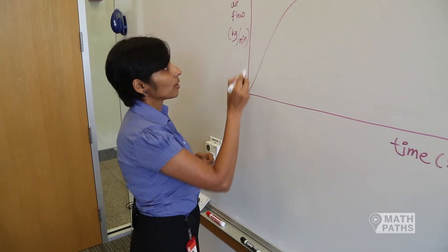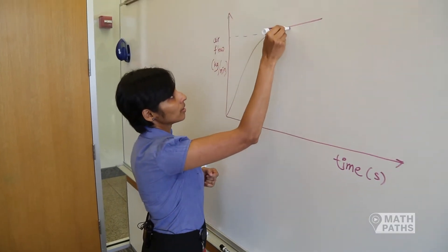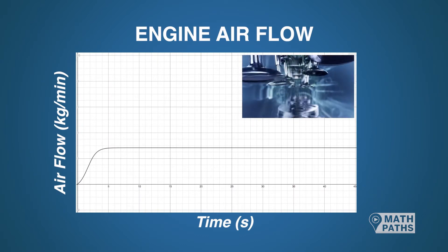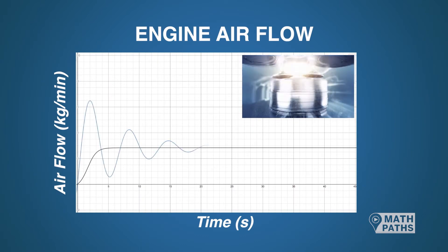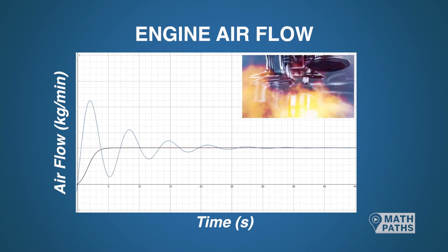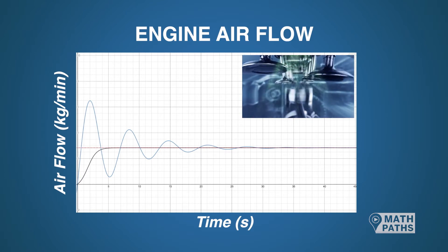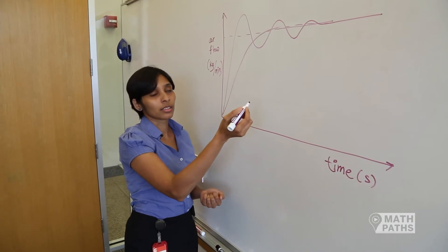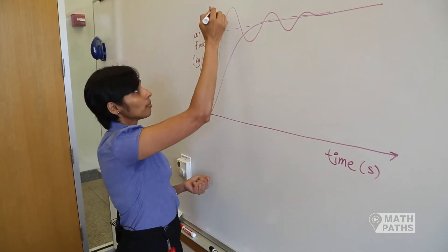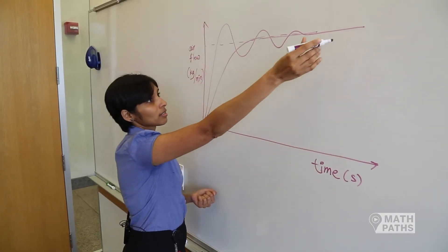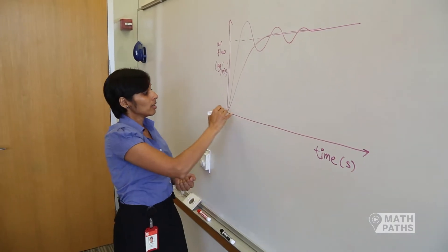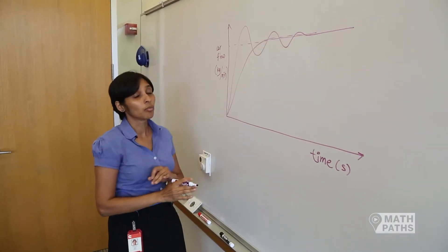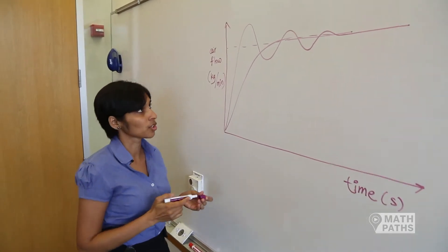Let's say I'm starting over here, and I want it to go here. In reality, the air might do this — it might go up and down, up and down, and then it'll settle to where I want it to go. Now this behavior is really not acceptable. So my goal as a control engineer is to go from this curve that is sinusoidal and going up and down to this more exponential looking curve, which is a cleaner, more stable, smoother engine operation.